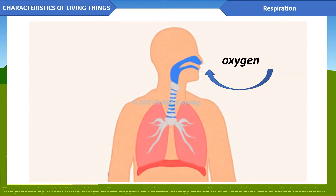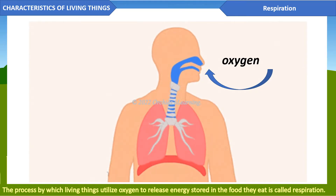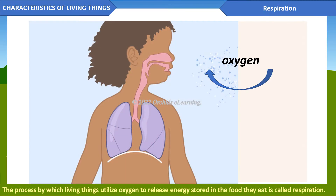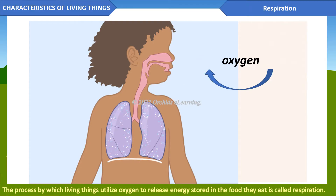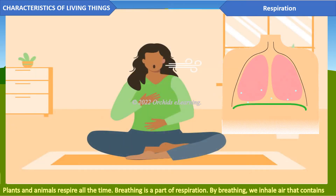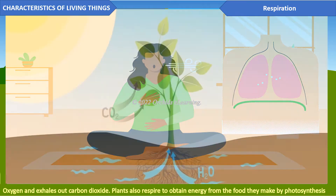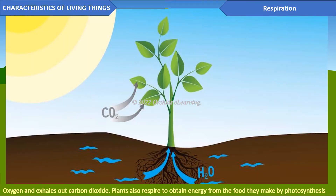Respiration: the process by which living things utilize oxygen to release energy stored in the food they eat is called respiration. Both plants and animals respire all the time. Breathing is a part of respiration — by breathing, we inhale air that contains oxygen and exhale carbon dioxide. Plants also respire to obtain energy from the food they make by photosynthesis.